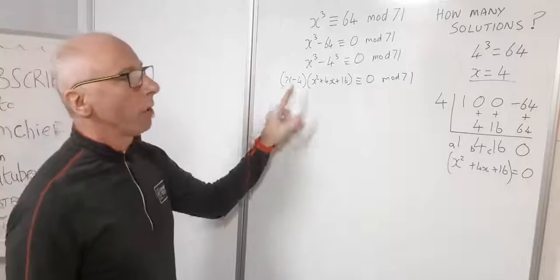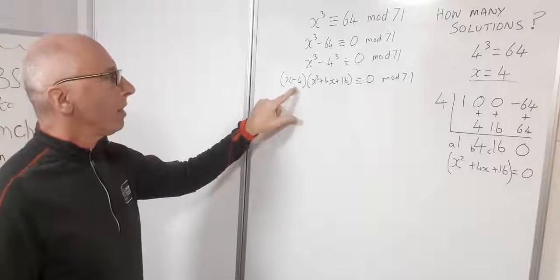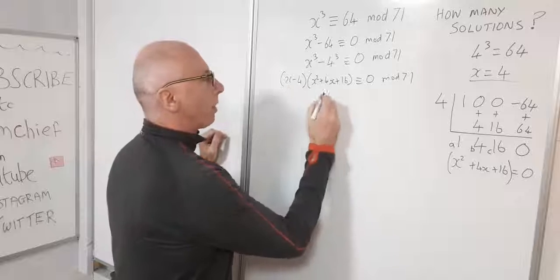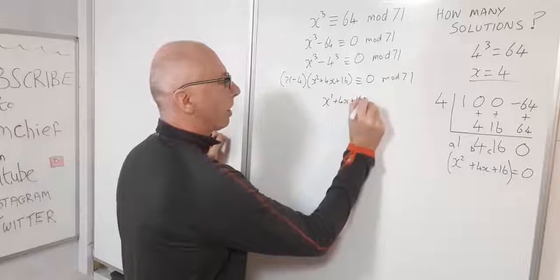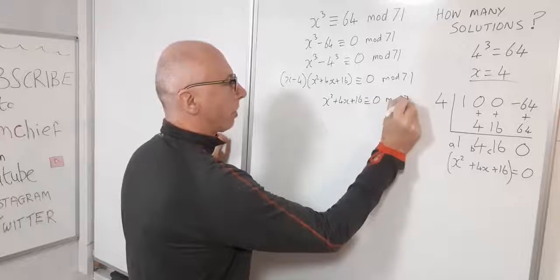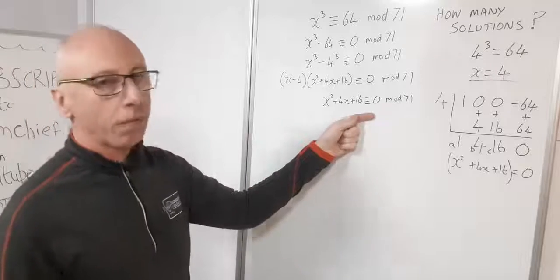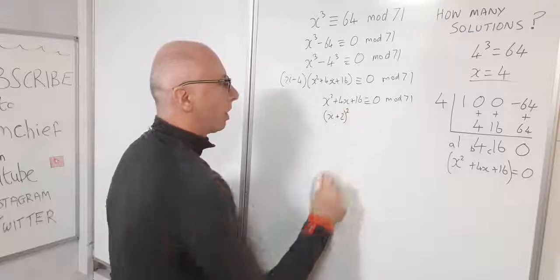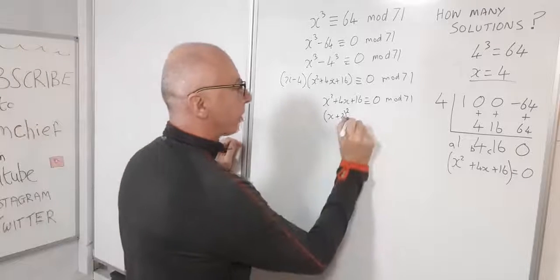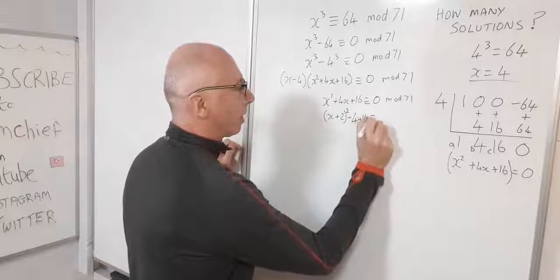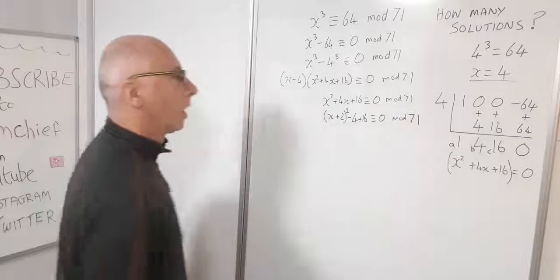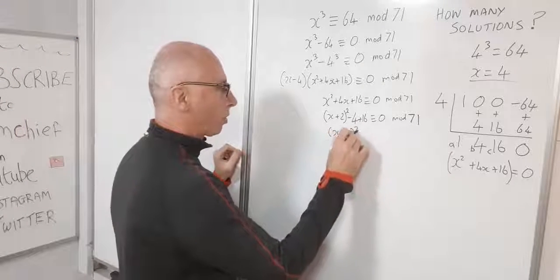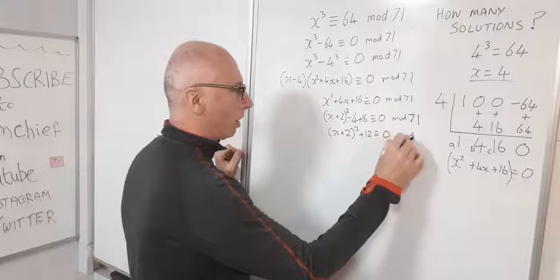We've already solved x minus 4 equals 0, giving x equals 4. So now let's look at the quadratic factor on its own: x squared plus 4x plus 16 is congruent with 0 mod 71. The logical next step is to complete the square — take half the coefficient of x, which gives x plus 2, then subtract the extra constant we've created to keep the value the same, and add 16.